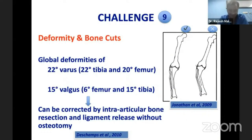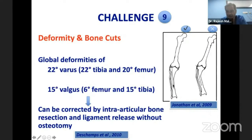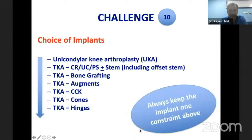Challenge number nine is taking care of the deformity and the bone cuts. The principles of varus and valgus deformity correction apply here: if a line along the distal tibial axis intersects the tibial plateau, it can be corrected intra-articularly. If it passes outside, extra-articular correction is needed. All those known principles have to be followed.